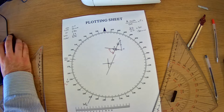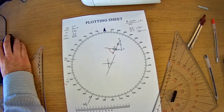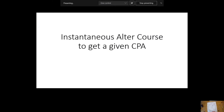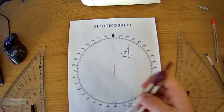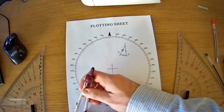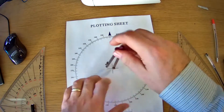A couple of things we might need to do with radar plots — there are lots of different tricks they ask. The first one: instantaneous alter course to get a given CPA. They might say, determine the alteration of course required to get a CPA of two miles. What we do is start by drawing in the CPA required — in this case, two miles.